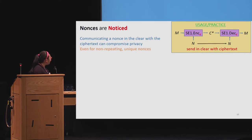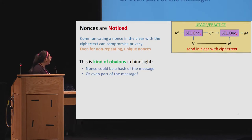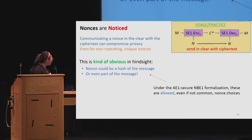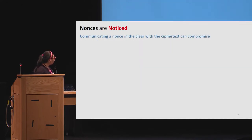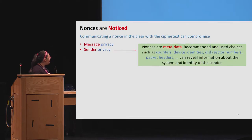This is where we get to the title of our paper — Nonces Unnoticed — which says that sending a nonce in the clear can compromise privacy in a somewhat obvious way. Think about an adversary who gets to pick the nonce and literally sets the nonce to be the hash of the message, or sets it to be the first block of the message. There's an obvious semantic security violation here, yet our formalization doesn't capture this because it doesn't need to communicate the nonce between sender and receiver. Even without discussing message privacy, we can talk about sender privacy, where nonces are effectively metadata that reveal information about who the sender is, thereby compromising user anonymity.